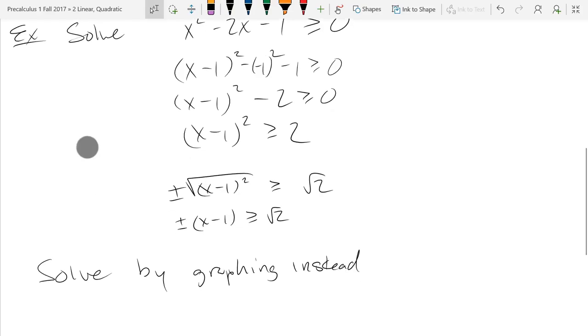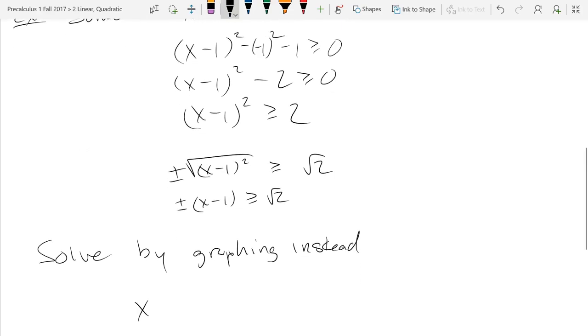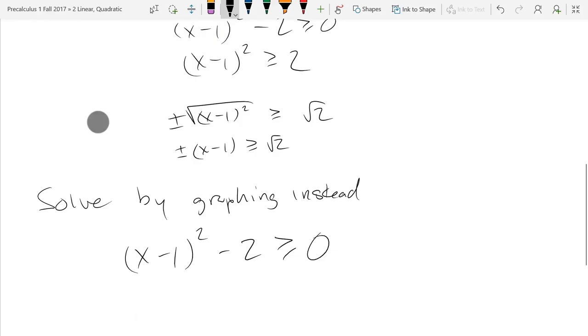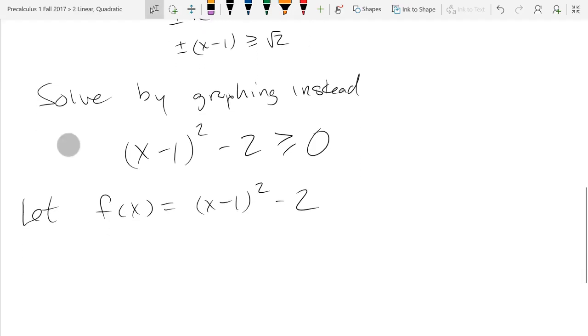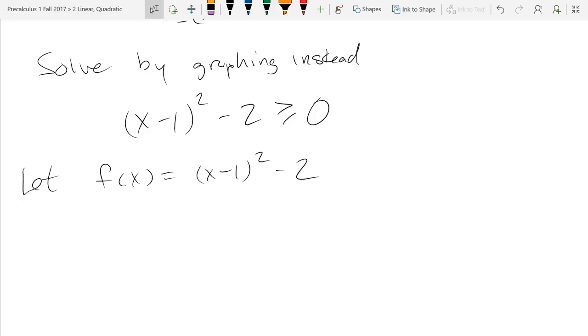We're going to solve by graphing instead. I'm going to use the completed square version here. We're always going to do the same first step: let f(x) equal the left side. Graph the f(x) function. This is the regular happy parabola with a horizontal and a vertical shift, so it should be pretty fast to graph this guy.